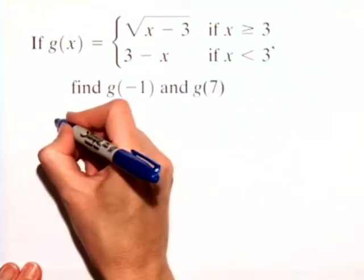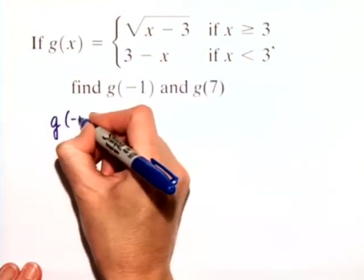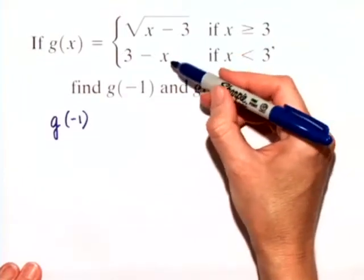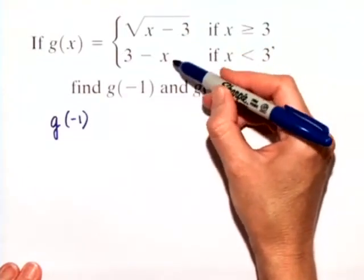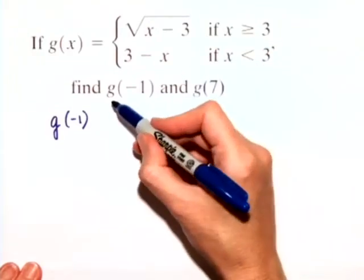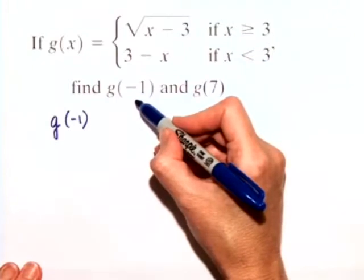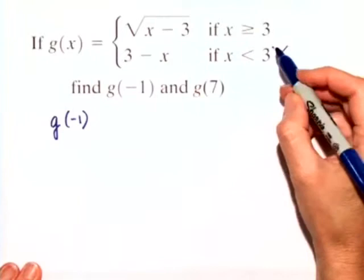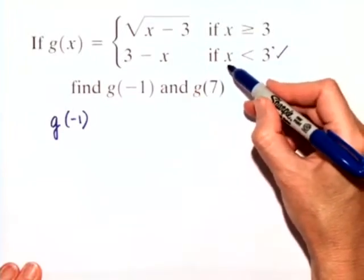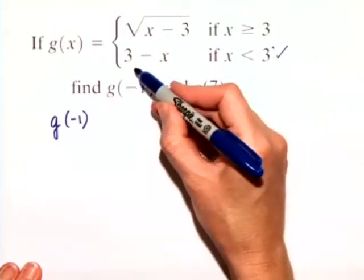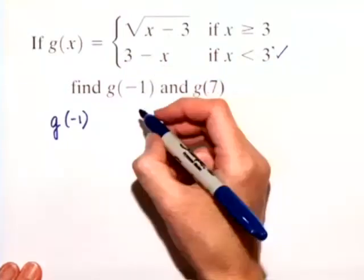So first, let's calculate g of negative 1. We need to determine which of these two functions to substitute negative 1 in for x. Let's look over here. Since g of negative 1 means we're substituting negative 1 in for x, we need to choose the second option here because negative 1 is less than 3. So if x is less than 3, we want to choose this function, 3 minus x.